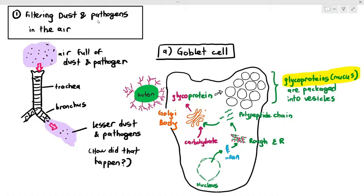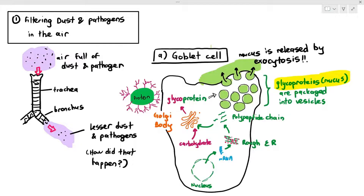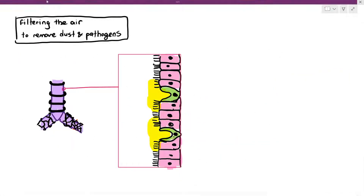Once packaged into vesicles, those vesicles fuse with the cell surface membrane. The mucus is then released by exocytosis — please do not say the vesicles are released by exocytosis, that is wrong. It is the mucus that is released by exocytosis; the vesicles only fuse with the cell surface membrane. As we studied in chapter 4, this process also requires ATP. This is how goblet cells produce and release mucin or mucus onto the surface of the epithelium.